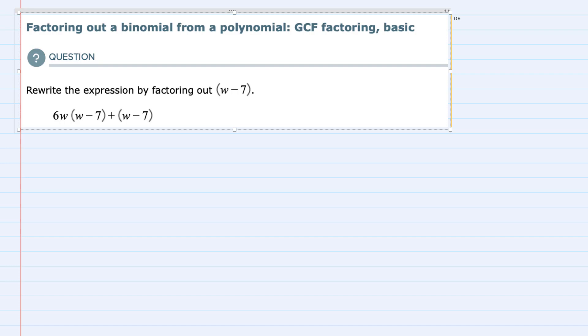So first we look at the expression and we can see that both the first term has a (w - 7) and the second term also has a (w - 7), and that's going to allow us to factor out the (w - 7).